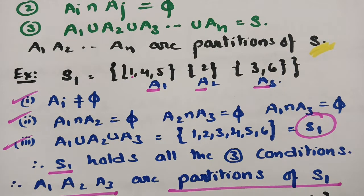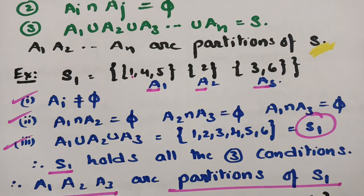So for partition, there are three conditions, whereas for covering there is only one condition: if you make a union and get the main set, all the subsets are the covering. I've made a clear distinction between covering and partition. If you understand this, please pass it on to your friends, leave a comment, share with your friends and siblings, and make sure you subscribe to this channel. Thank you so much.